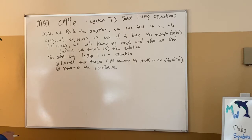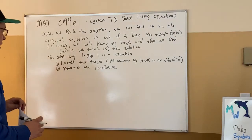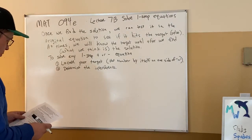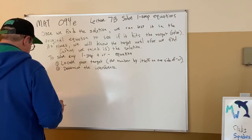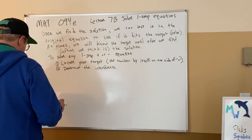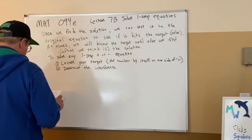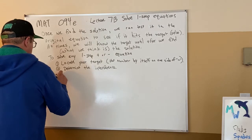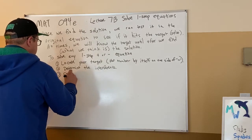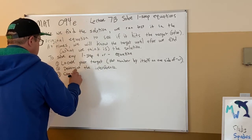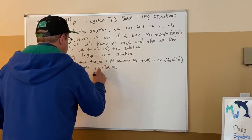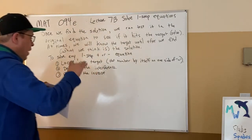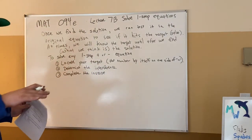We have to determine what's interfering — why is it that our x, or whatever letter we're looking for, is not already alone? It's called isolating the variable. Number three: complete the inverse operation. Inverse means it's going to wipe out the interference.